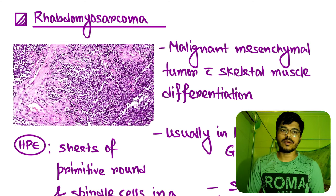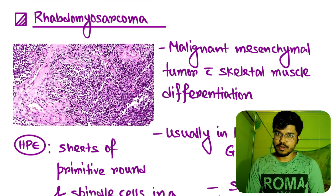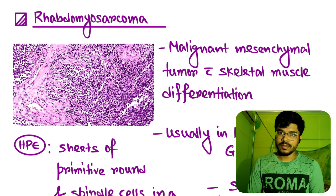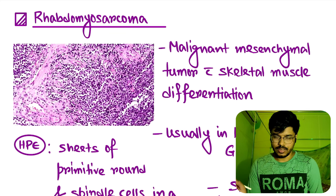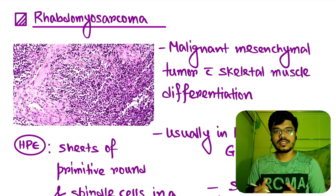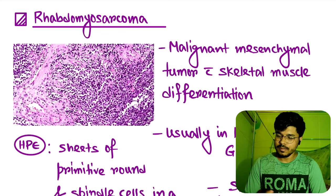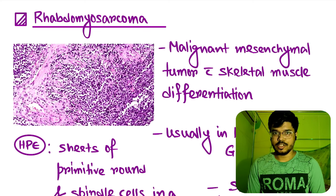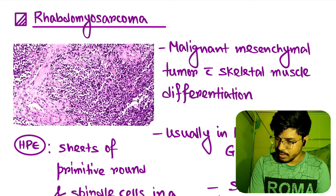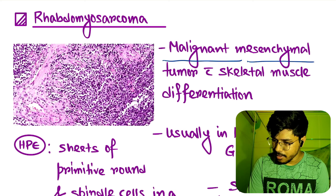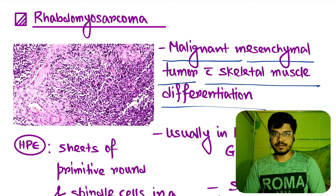Hi guys, now we talk about rhabdomyosarcoma. Rhabdomyosarcoma means skeletal or striated origin; myo means muscle, sarcoma means mesenchymal tumor and it is a malignant tumor. So rhabdomyosarcoma is a malignant mesenchymal tumor with skeletal muscle differentiation.